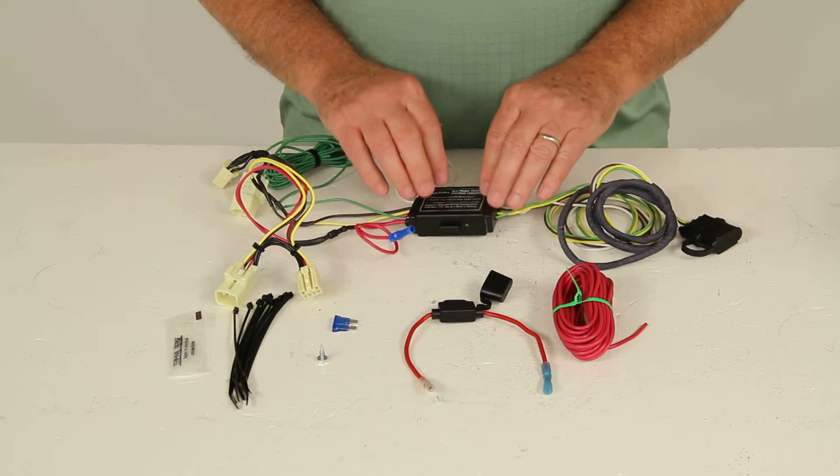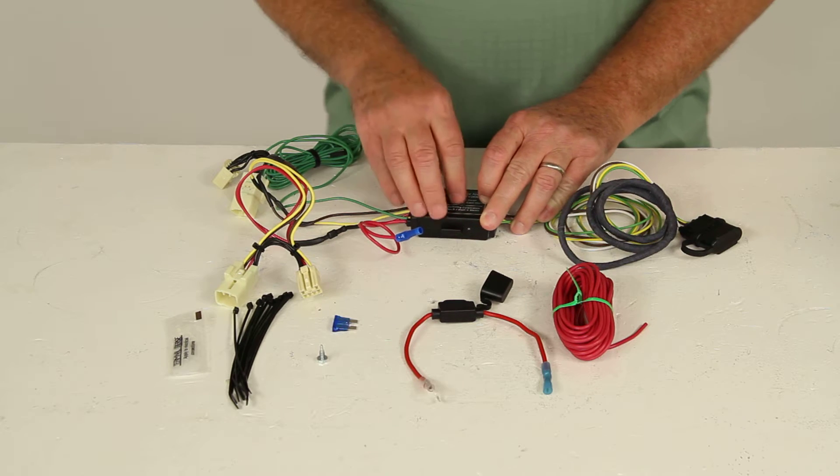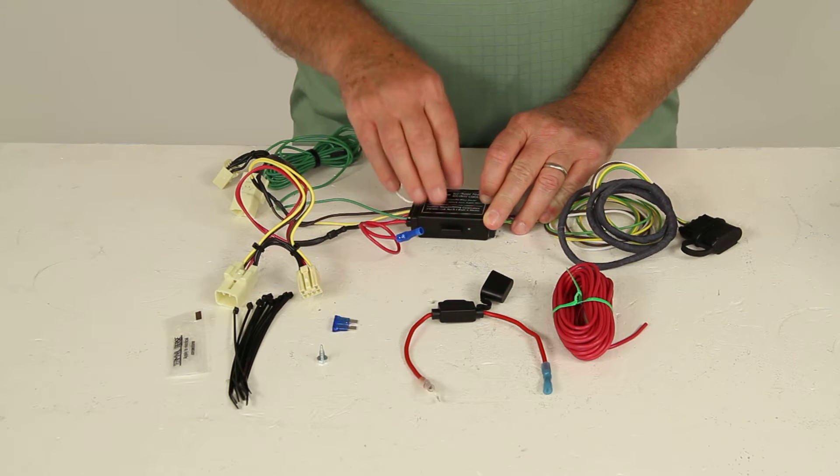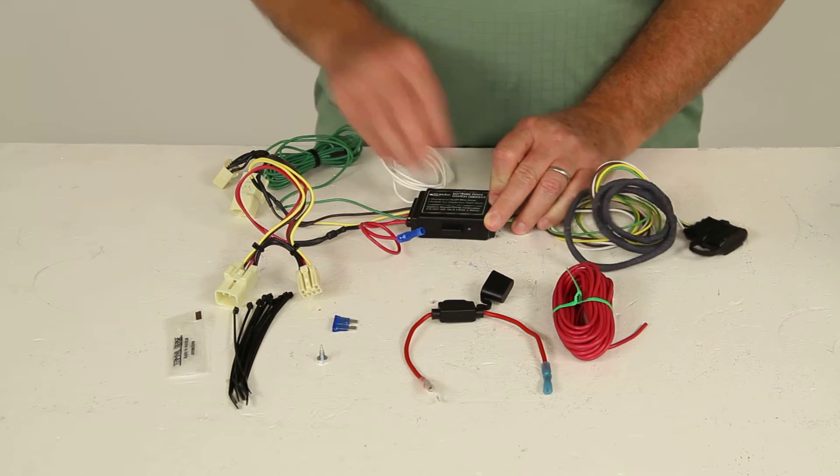Now on this converter module, the specs on it, the maximum amperage is for stop and turn lights would be 3 amps per circuit maximum, and on the tail lights would be 6 amps.